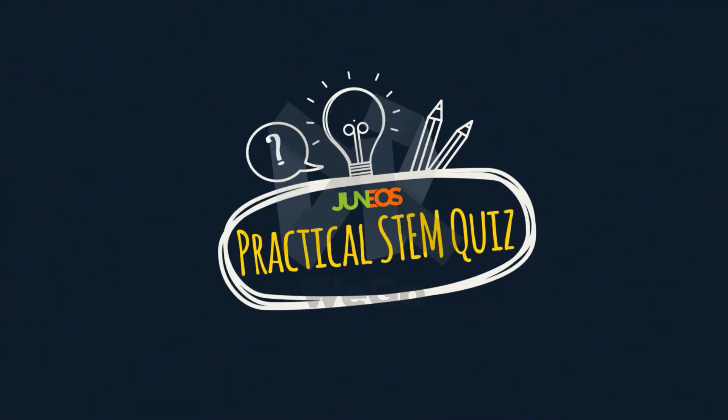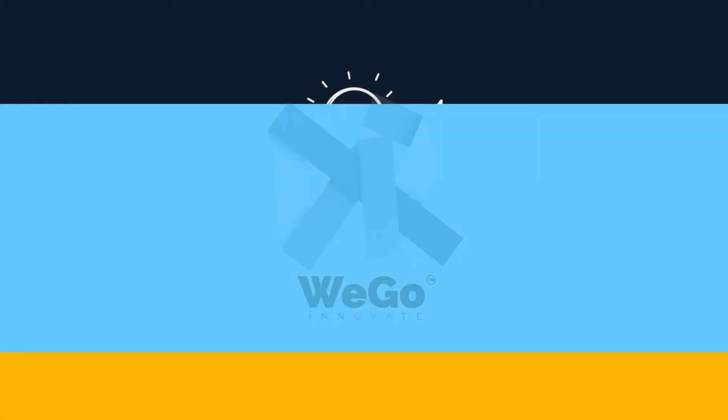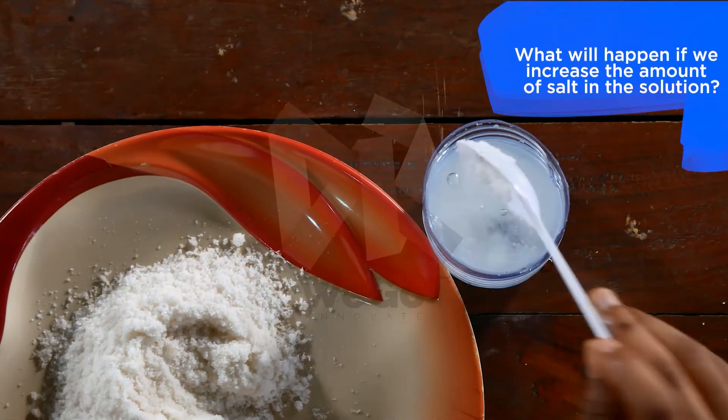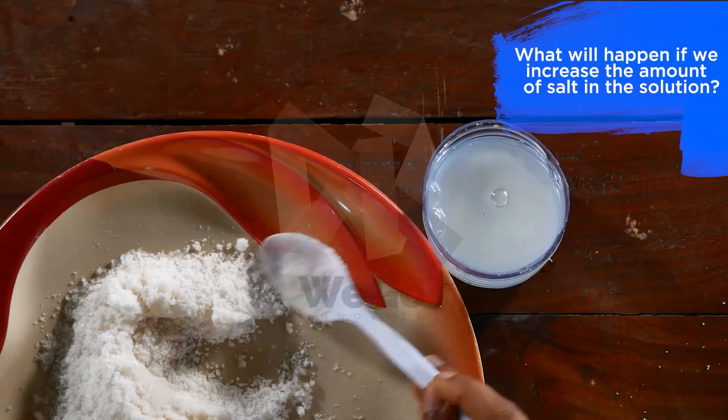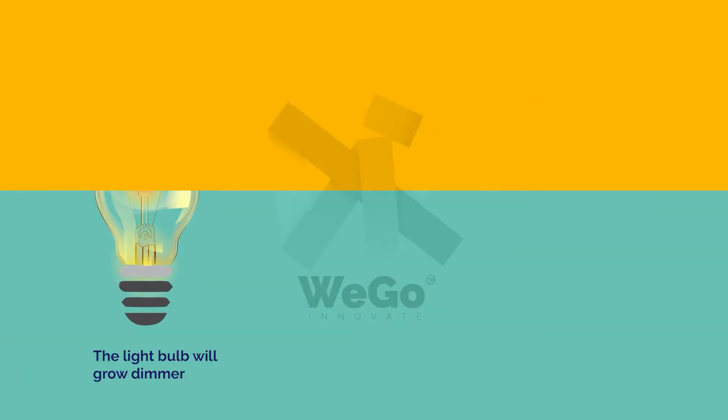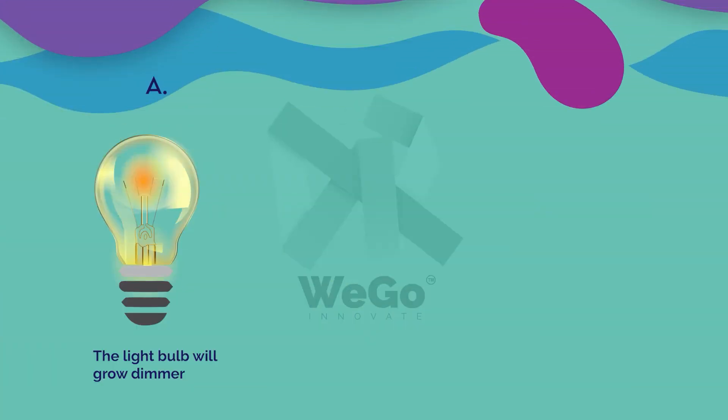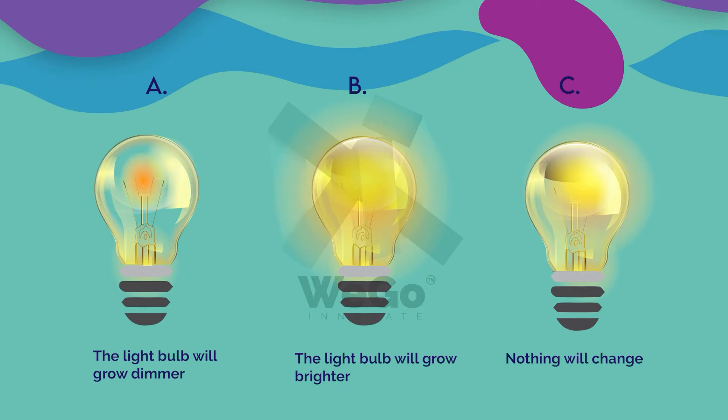It's time for Geno's practical STEM quiz. What will happen if we increase the amount of salt in the solution? A. The light bulb will grow dimmer. B. The light bulb will grow brighter. Or C. Nothing will change.